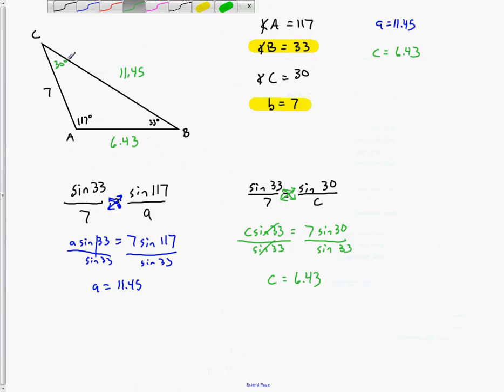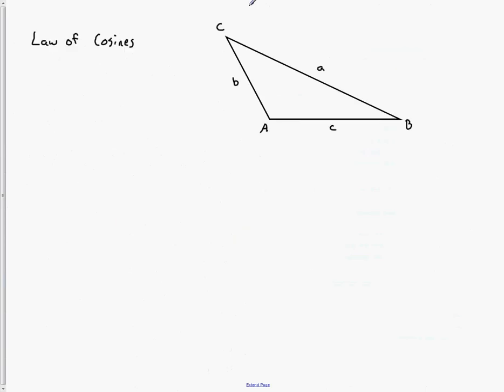Those are the only two values I had to solve for: A is 11.45, C is 6.43, and we've solved that triangle. That's law of sines in a nutshell. Now we want to look at the Law of Cosines. The Law of Cosines comes into play when we don't have two of a matching set — we don't have big B and little b, big A and little a, or big C and little c. If we've got all three sides and no angles, we have to use Law of Cosines.